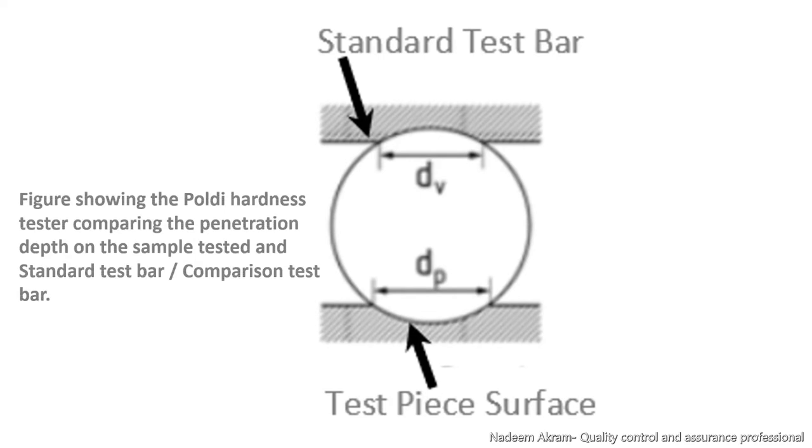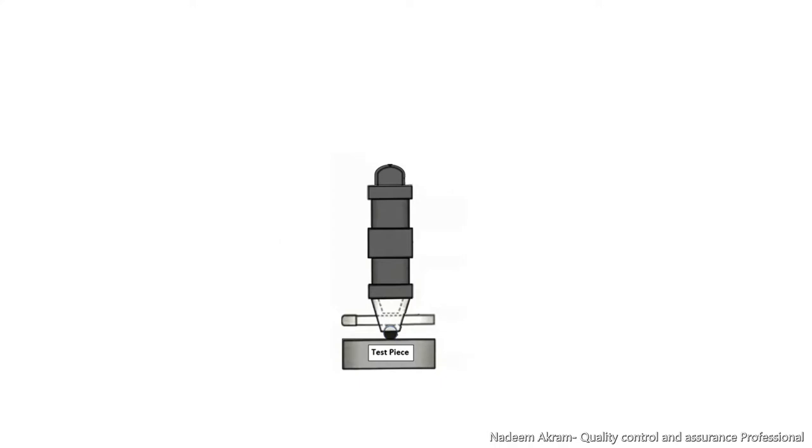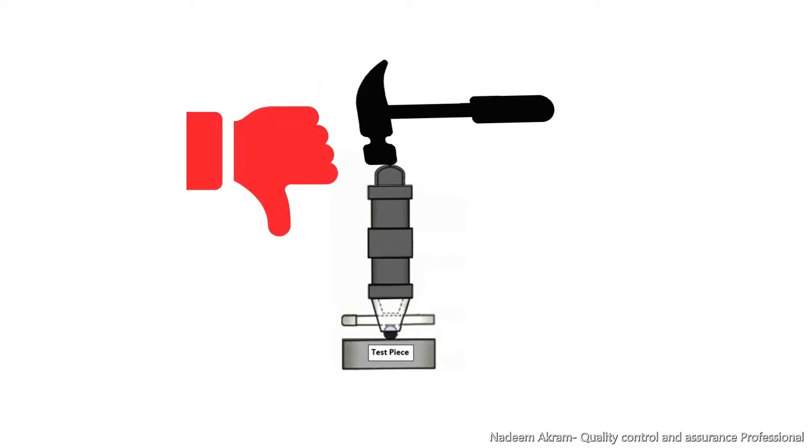It is essential to apply a well-guided, short blow to avoid a rebound and thus a double blow that may produce an erroneous result by damaging the sharp edge of the ball impression.